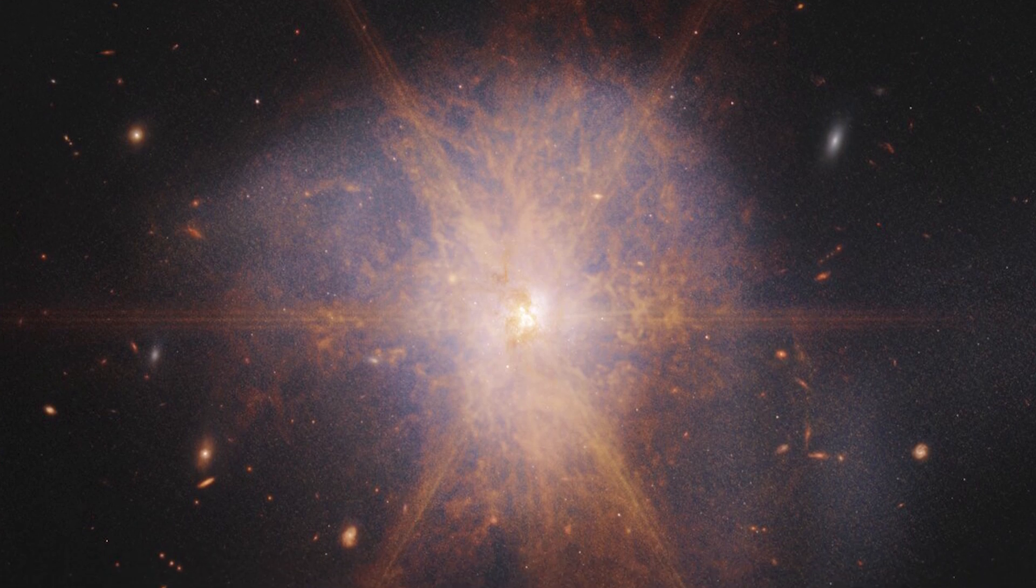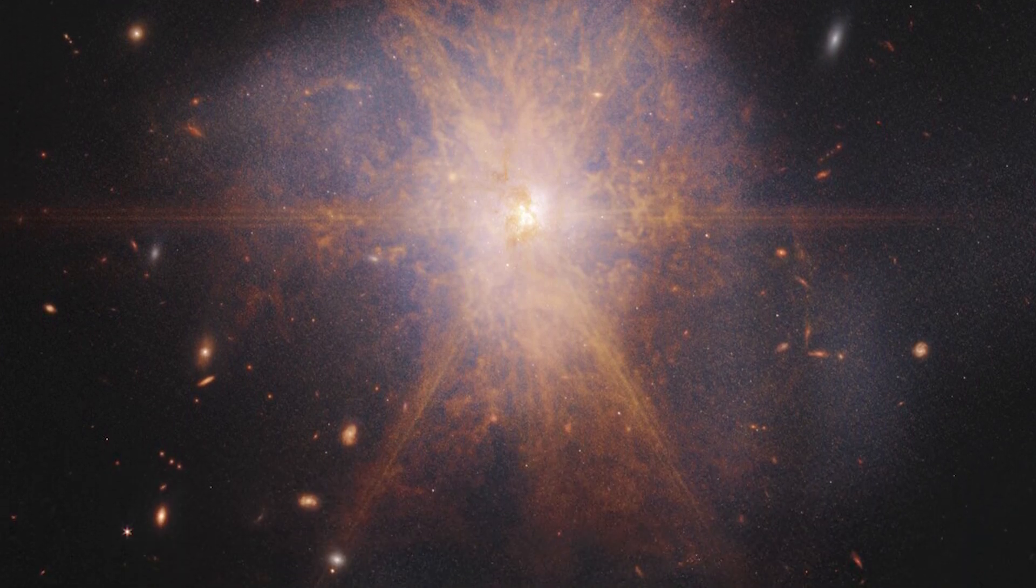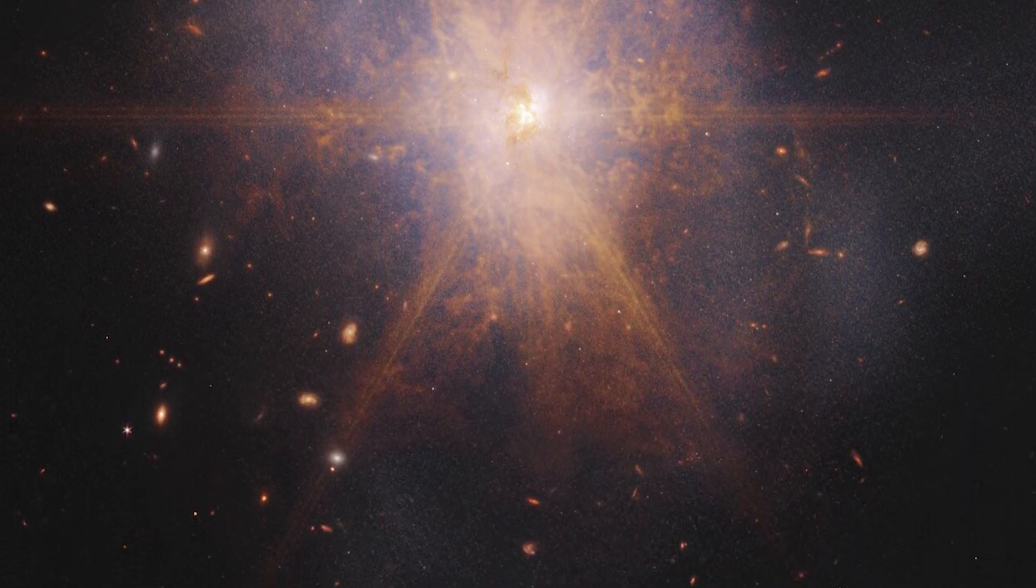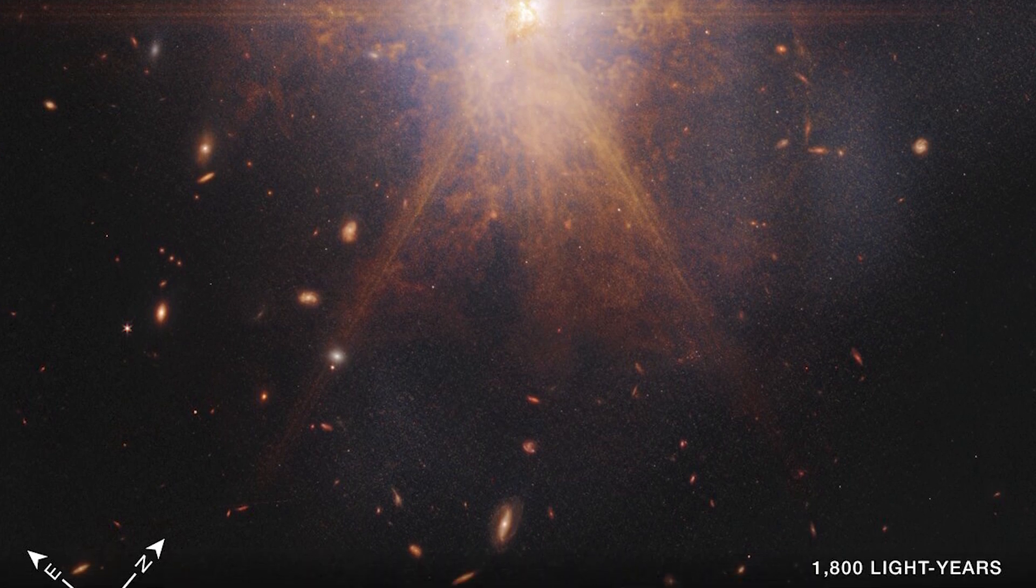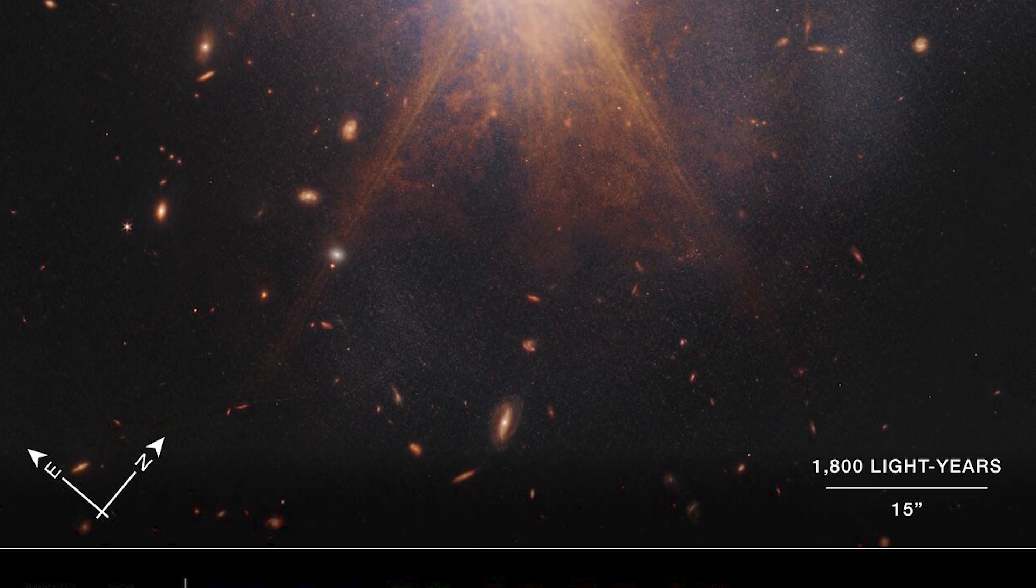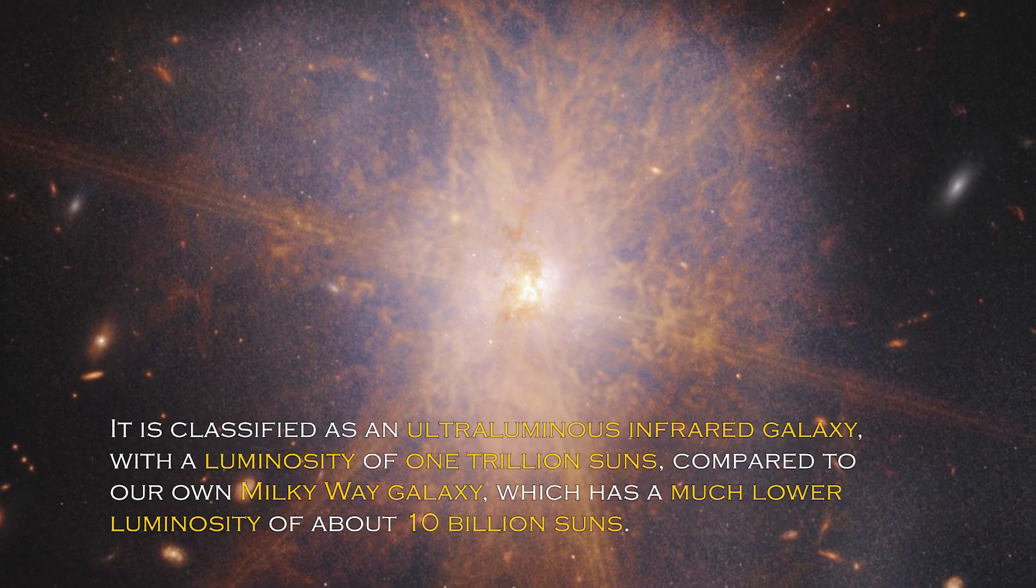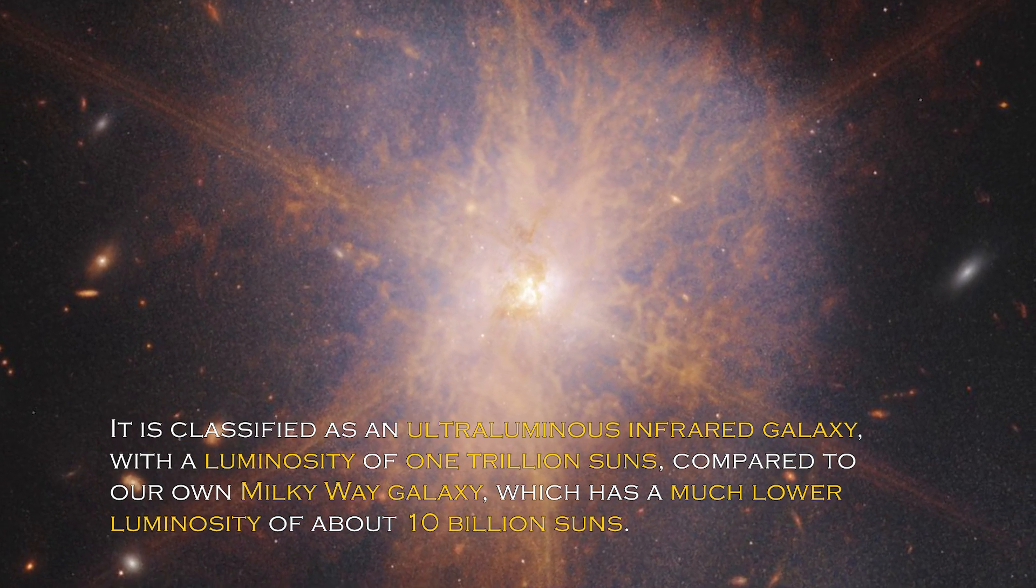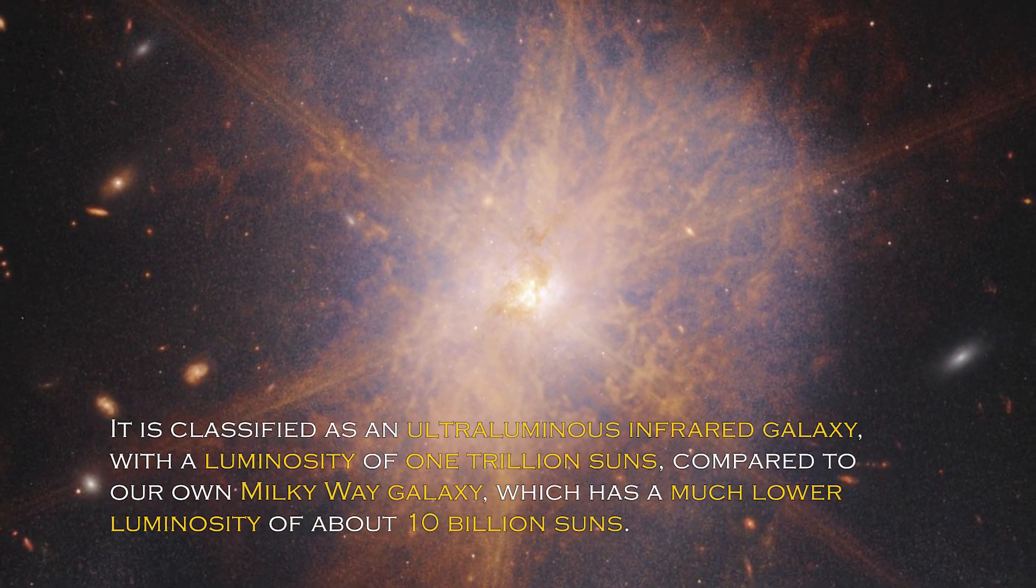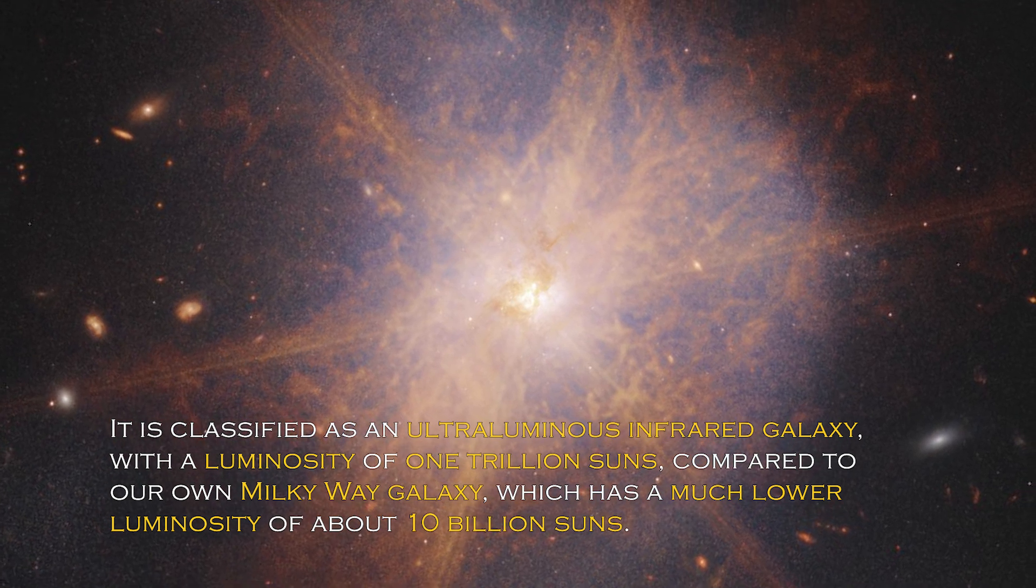When two spiral galaxies merge, the phenomenon known as ARP 220 shines brightest in the infrared, making it perfect for observation by the James Webb Space Telescope. It is classified as an ultra-luminous infrared galaxy, with a luminosity of trillion suns compared to our own galaxy, the Milky Way, which has much lower luminosity of about 10 billion suns.